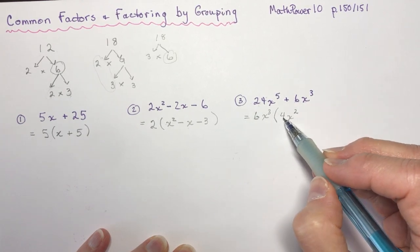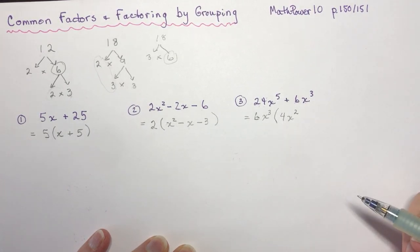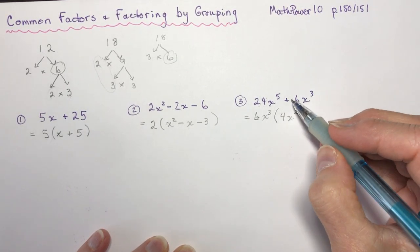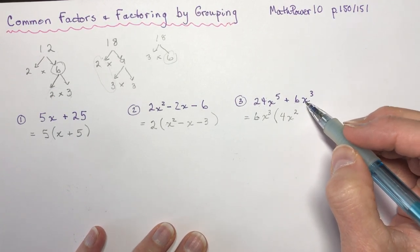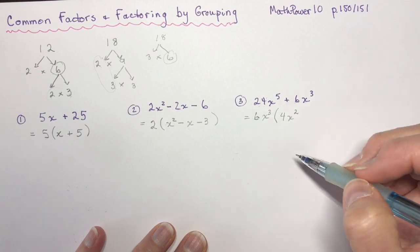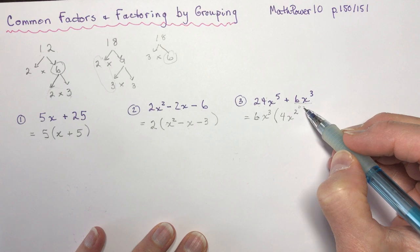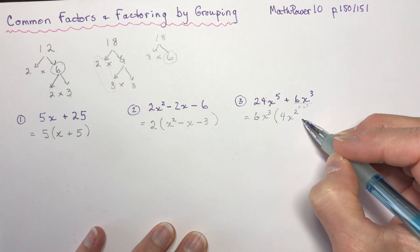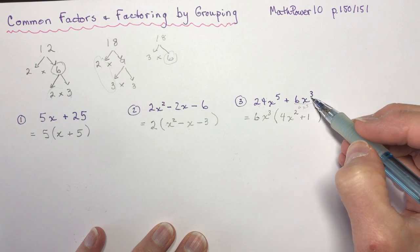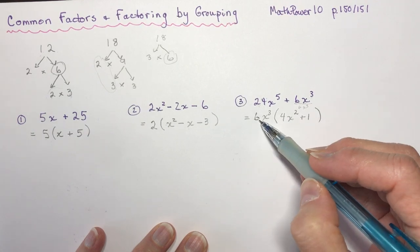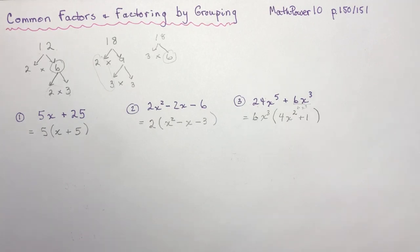Double check: 6 times 4 is 24, and x cubed times x squared is x to the fifth. Now for the second term, 6x cubed divided by 6x cubed — some students make a mistake and leave this blank, but you have to think of it as dividing by 6x cubed, which goes in one time. So you must write a 1 there. When you expand, 6x cubed times 1 is 6x cubed. Don't throw that 1 away.